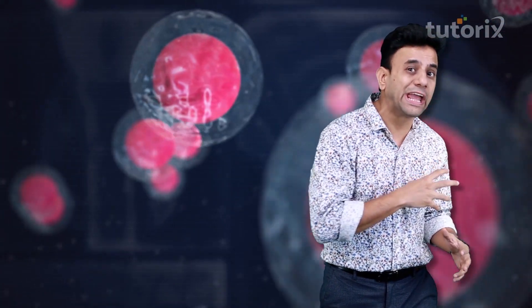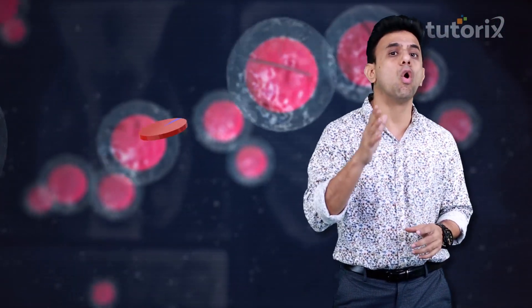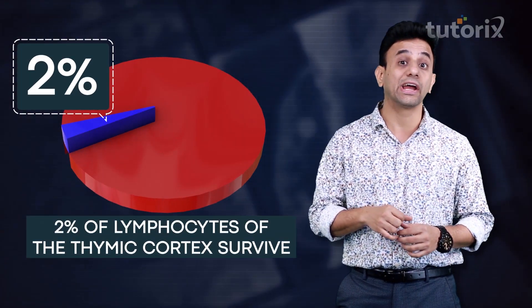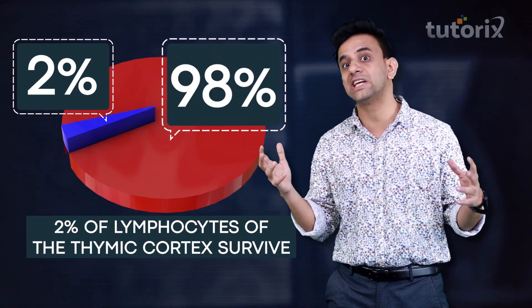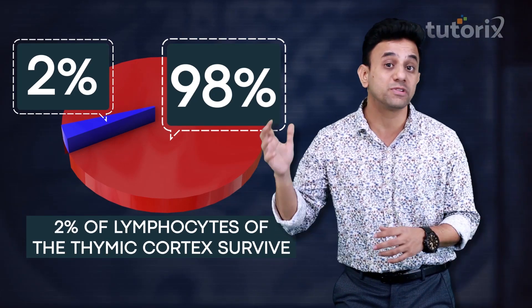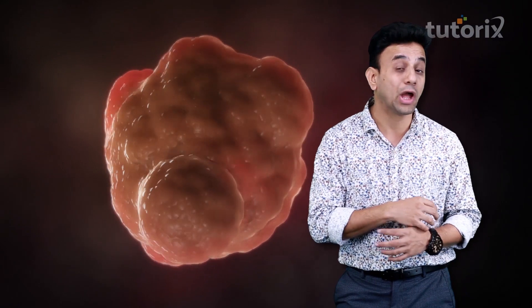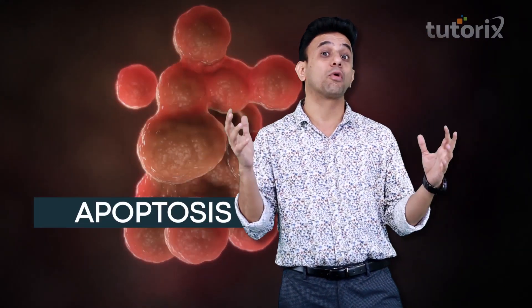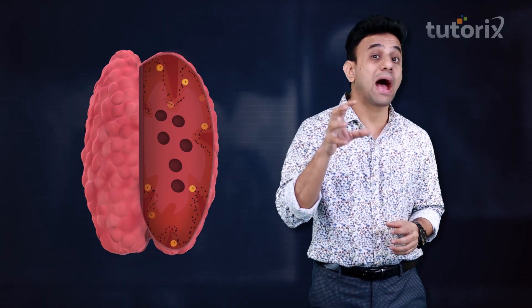A very striking fact: out of all the T lymphocytes which develop in the cortex of the thymus, only two percent of the T lymphocytes survive. The remaining 98 percent of the maturing T lymphocytes will die via apoptosis, which is programmed cell death.